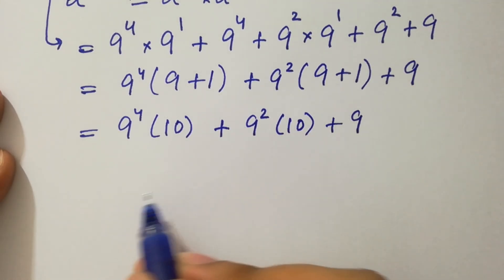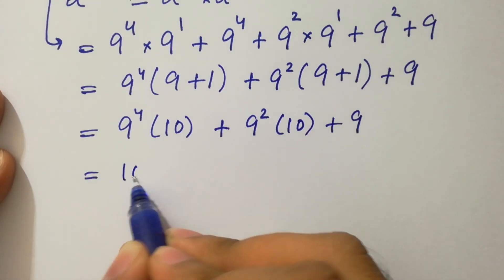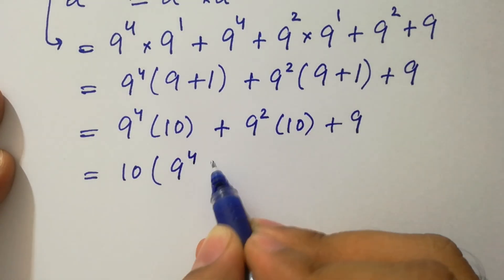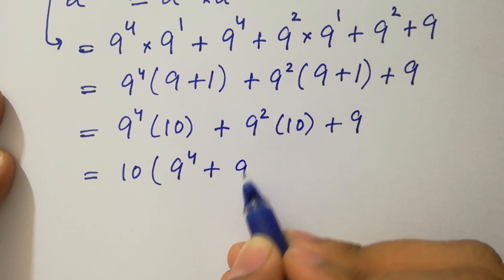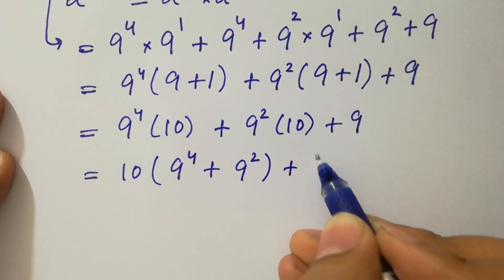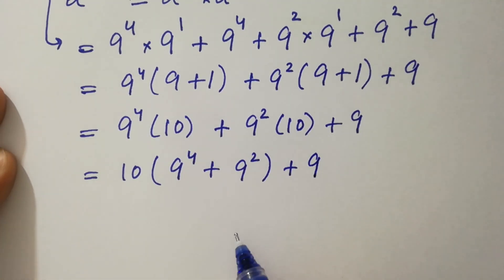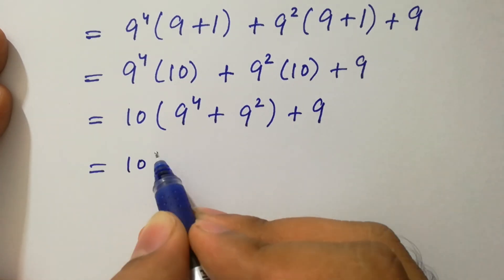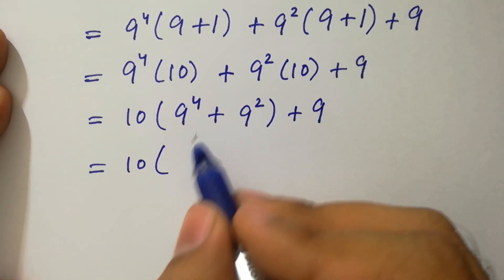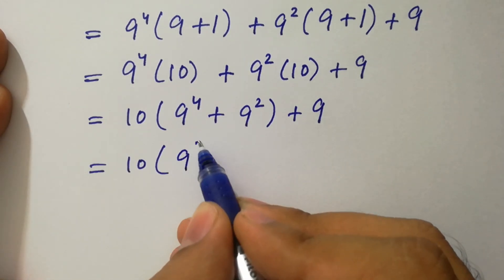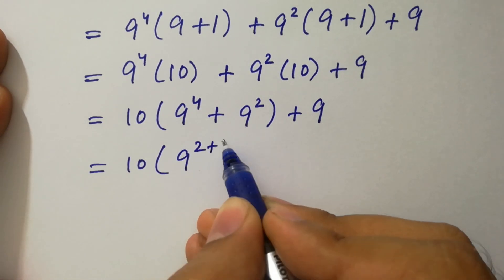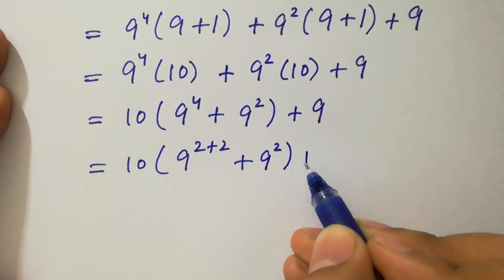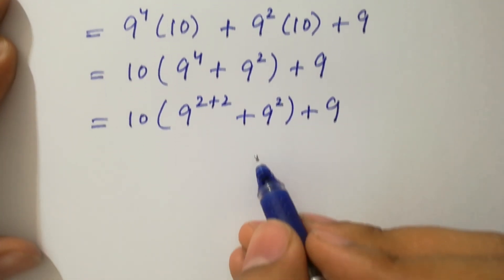Here 10 can be common. We have here 10 times 9 to the power 4 plus 9 squared plus 9 as it is.